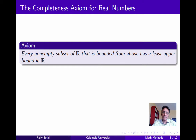We'll start with the completeness axiom for real numbers. Recalling our discussion of the least upper bound property for ordered sets, we say that a set S satisfies the least upper bound property if every non-empty subset that's bounded from above has a least upper bound in S. The completeness axiom for real numbers simply states that the real numbers satisfy the least upper bound property.